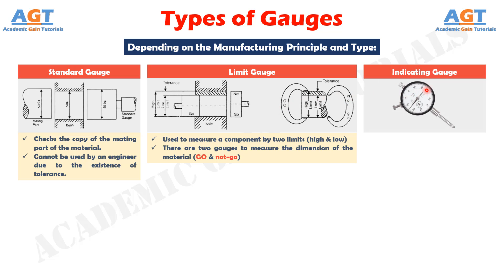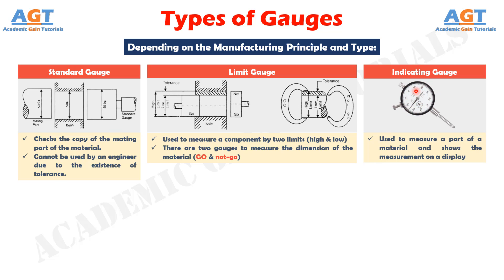Indicating gauge. An indicating gauge is defined as the gauge which is used to measure a part of a material and shows the measurement on a display. This gauge displays the measurement on the indicator or display, so it is termed as the indicating gauge. This gauge is more complex than other gauges. The best example of the indicating gauge is the dial gauge. Nowadays such indicating gauges have a system of visual display.